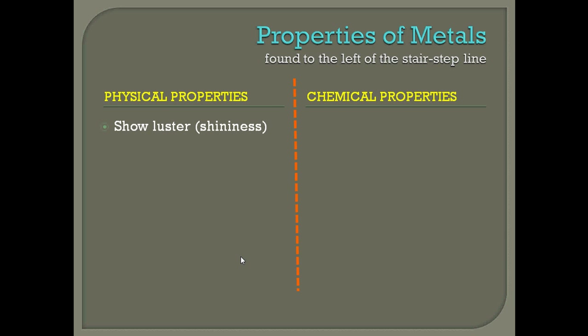Let's start with properties of metals. Look at your periodic table — they are going to be found left of the stair-step line. You should have also colored these yellow when we color-coded the periodic table. The first physical property is that they are going to be shiny, or what we call luster. If it has luster, that means it's going to have some kind of shininess to it, which you've probably noticed on metals you've seen.